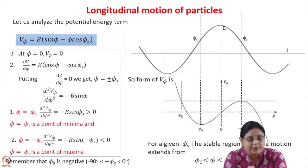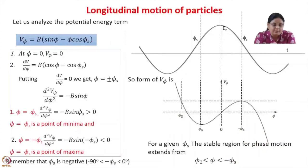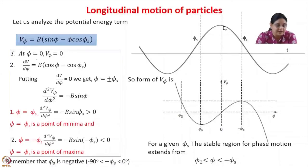Let us analyze the potential energy term. The potential energy term, let us call it V(phi), is given as b times (sin phi minus phi cos phi_s), where b is a constant, phi_s is the synchronous phase, and phi is the phase of the arbitrary particle. At phi equal to 0, we can calculate V(phi) equals 0, since both terms go to 0.